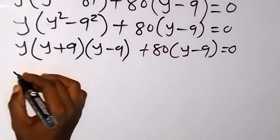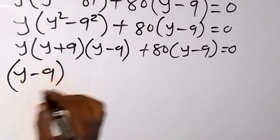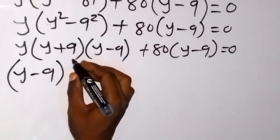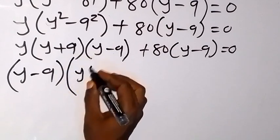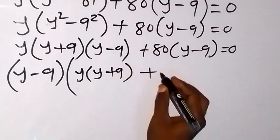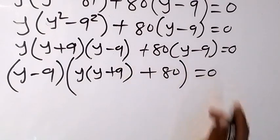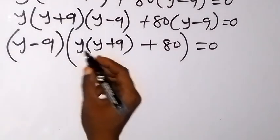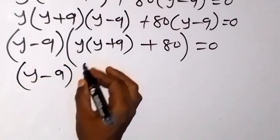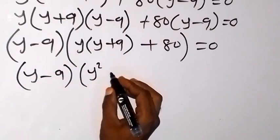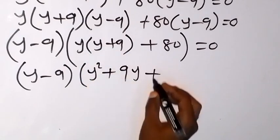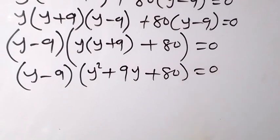From here, y minus 9 is a common factor. Taking it out, we have y minus 9 multiplied by the bracket y times y plus 9 plus 80, which equals 0. Expanding, that gives y minus 9 multiplied by y squared plus 9y plus 80, equals 0.